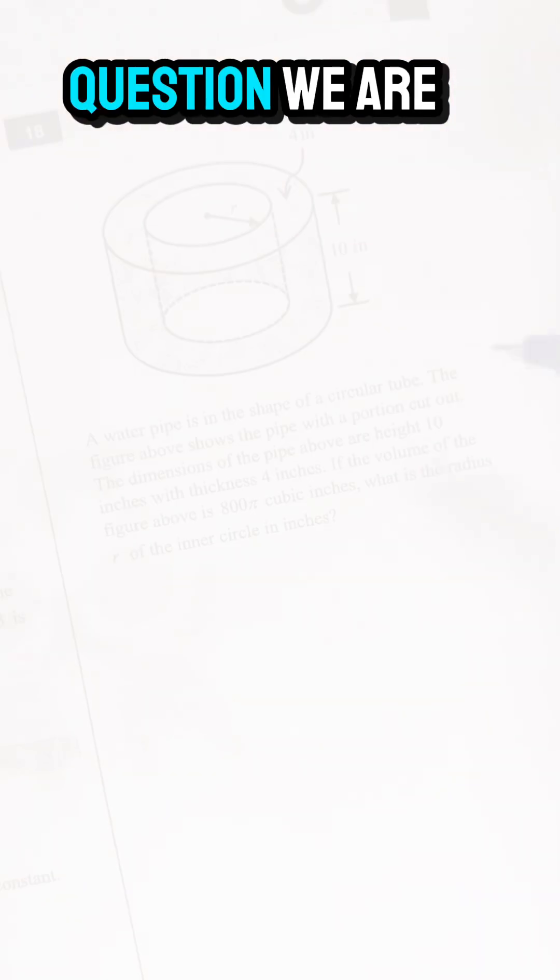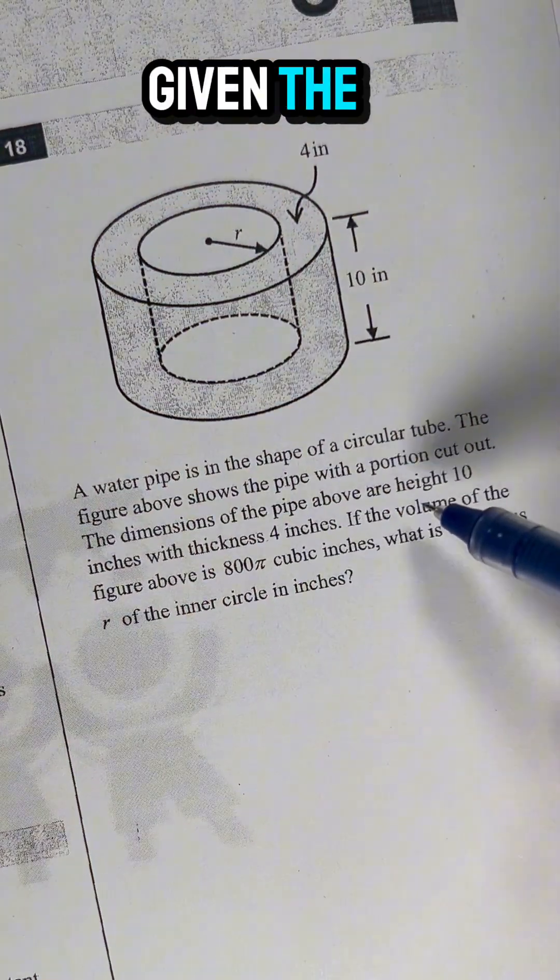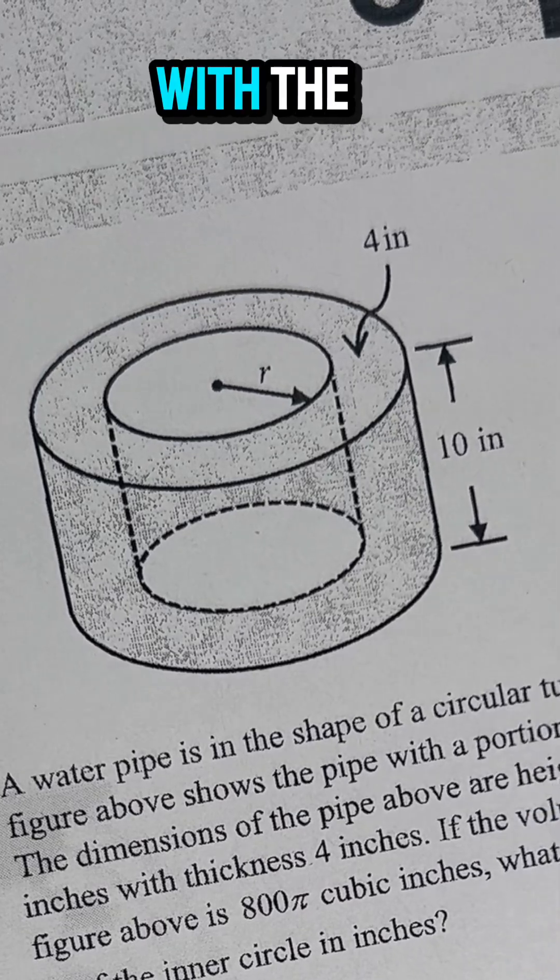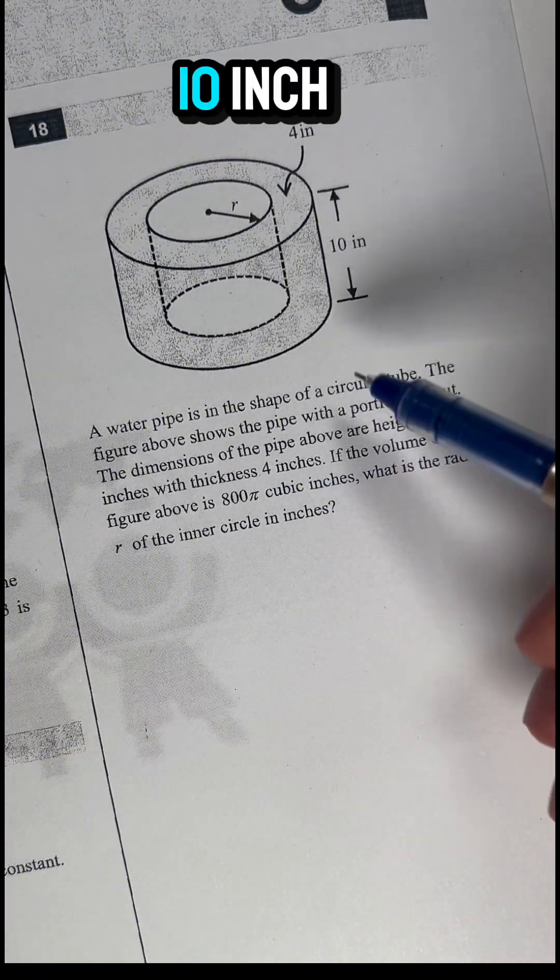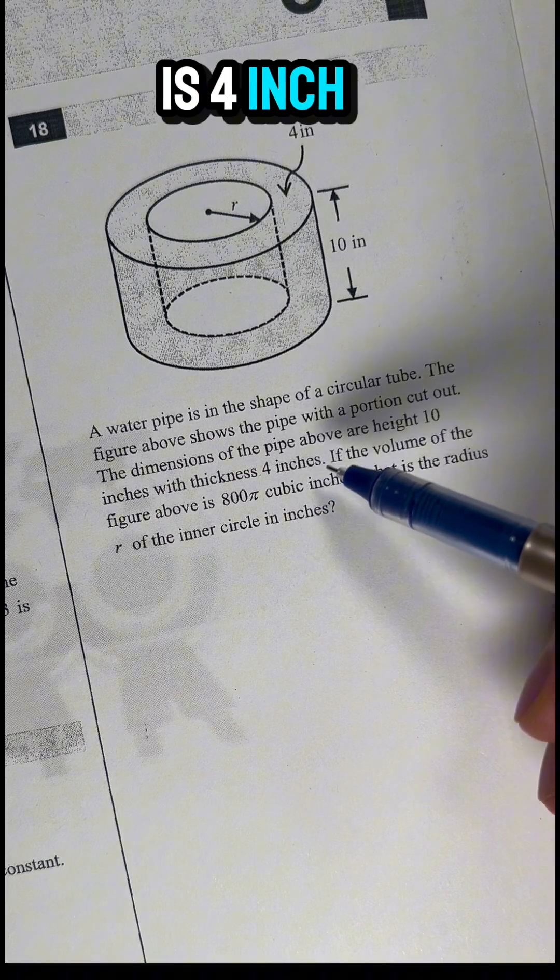Almost no one can solve this question. We are given a figure that shows a pipe with a portion cut out. The dimensions of the pipe are height 10 inches with thickness 4 inches.